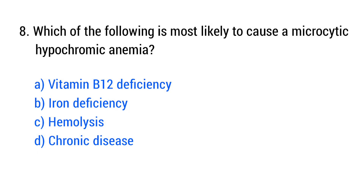Question number 8. Which of the following is most likely to cause a macrocytic hypochromic anemia? The right answer is option B: Iron deficiency.